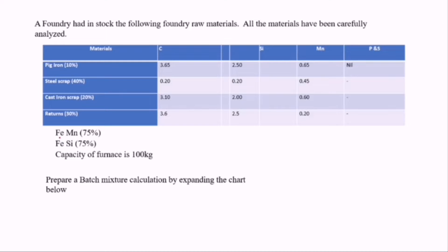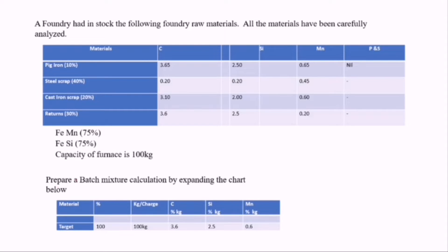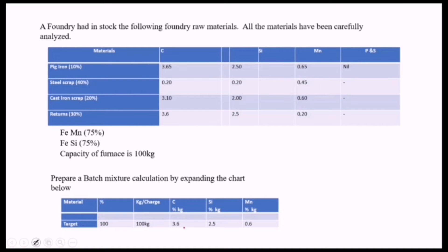They are going to provide you with two tables. They say: prepare a batch mesh chart calculation by expanding the chart below. So we need to expand the chart to get the mixture calculation. We have the total target which is 100, and the total weight percentage is 100, meaning the charge is 100 kilograms. We have for carbon: 3.6, for silicon: 2.5, and for manganese: 0.6. So then, we need to prepare a table by expanding the chart below.